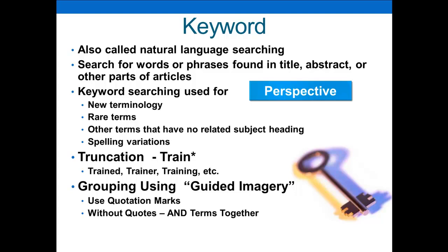If you want to ensure you're getting everything with keyword searching, one technique is called truncation. As you're typing your term — say you're interested in 'training' — somebody may have described it as 'trained' in their article. What you can do is type a word stem and then add a star. The star forces the database to attach every possible suffix to that stem, as shown in the example below, giving you 'trained,' 'trainer,' 'training,' etc. This really expands your search, though be cautious because it also gives you more articles to sift through.